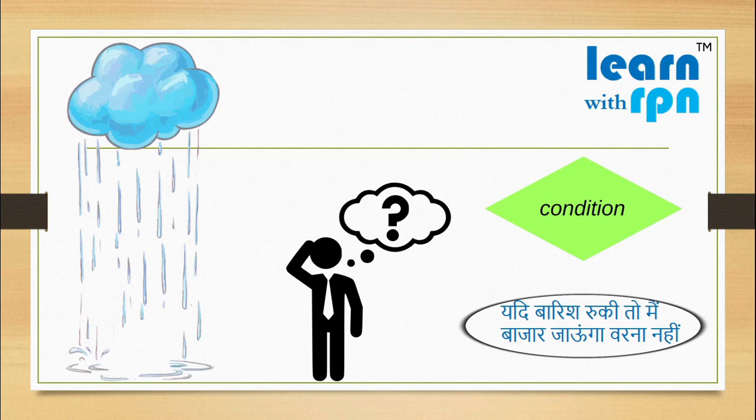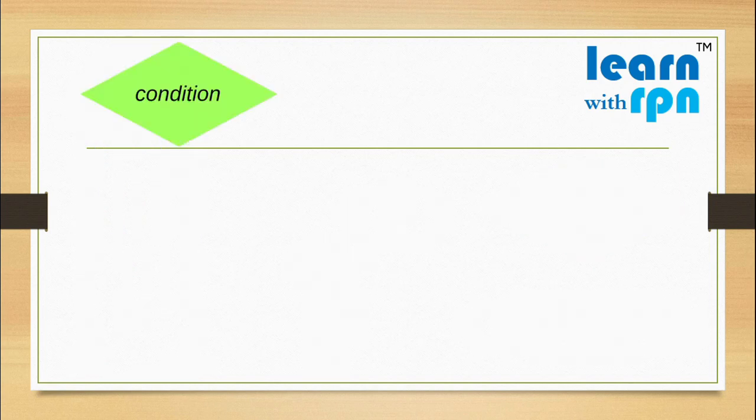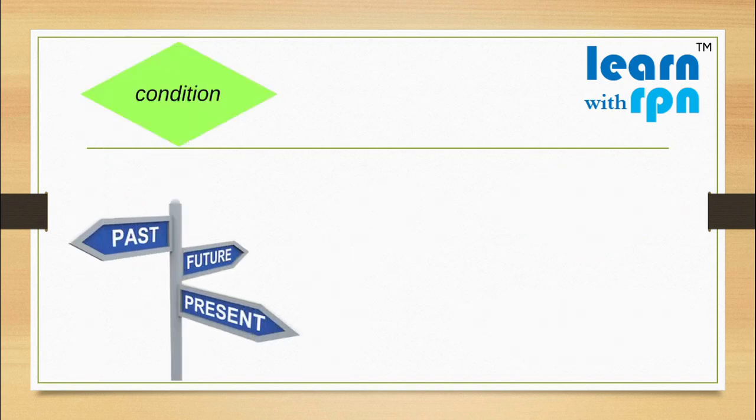In a conditional sentence, we have two parts, and one part depends on the other part. Here, the action of going to the market depends on the condition of rain. These conditional sentences may be related to past, present, and future. Let's learn how to speak these conditional sentences in English one by one.